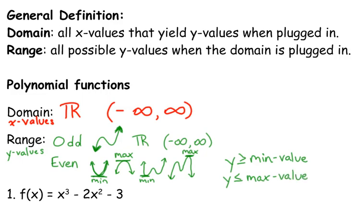It's either y is greater than or equal to a minimum value or if you have a maximum, your y values are less than or equal to your maximum value. And, in interval notation, that would be min to infinity. Or, for the maximum, it's from negative infinity to the maximum if you're doing interval notation.